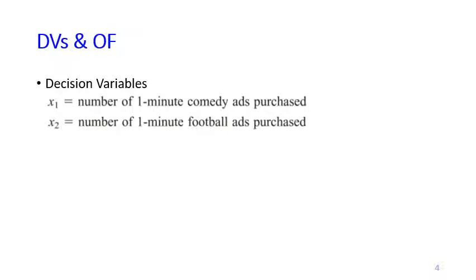So the problem description already gives us some clue about the decision variables, which is the number of one-minute comedy ads purchased and the number of one-minute football ads purchased. We denote them as X1 and X2.